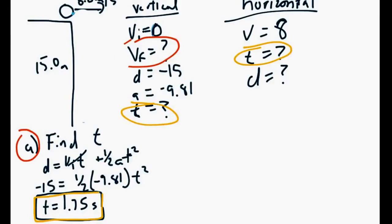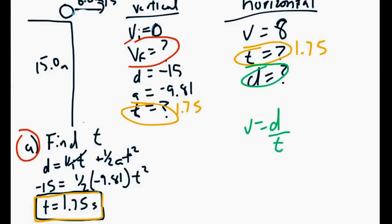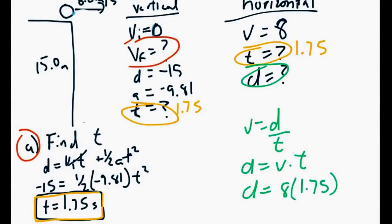Now that we have the time of 1.75 seconds, we can solve for our horizontal distance. For the horizontal part, it's constant speed, so the distance is easy: distance equals velocity times time. So we have 8 times 1.75, which gives us an answer of 14 meters. That's our horizontal distance.